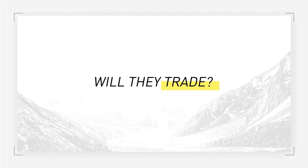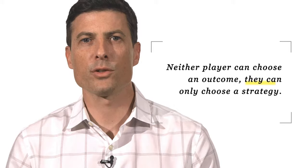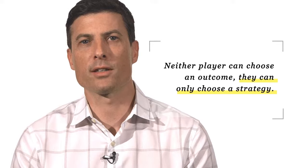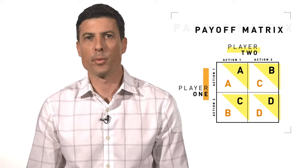Will the trade happen? It depends. Neither Loki nor Odin can choose an outcome — they can only choose a strategy. In other words, each of them can only choose what he will do while trying to predict the other player's behavior. We can model a game like this with a box called a payoff matrix, which lists different possible outcomes associated with different actions the players might take. The payoffs could be piles of cash, years in prison, or just about any other outcome we can think of.